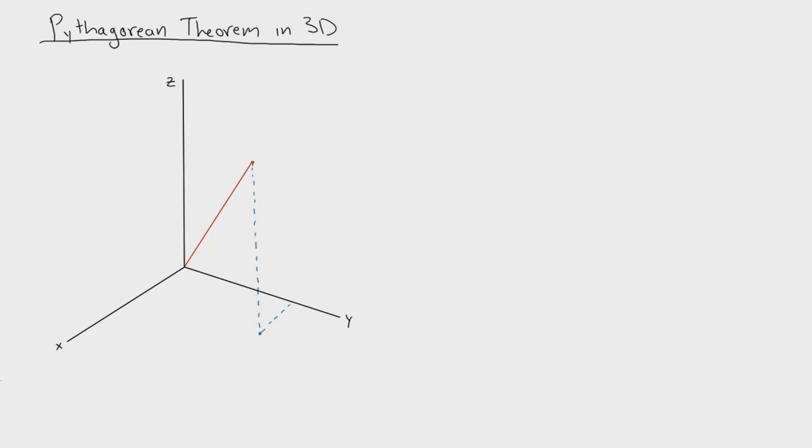And by that same logic, we could project this distance onto the x,z plane. So one thing to point out is that these lines are parallel to these given axes. So I'm going to say that this is parallel to the y-axis. I'm going to say this line right here is parallel with the z-axis.